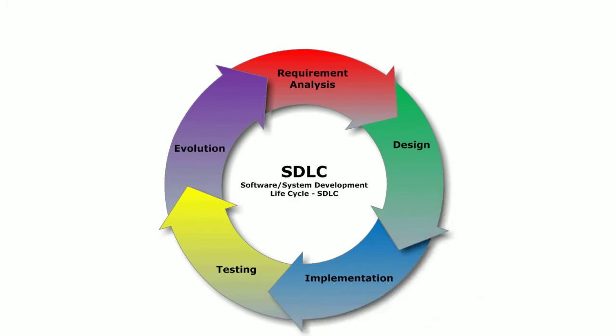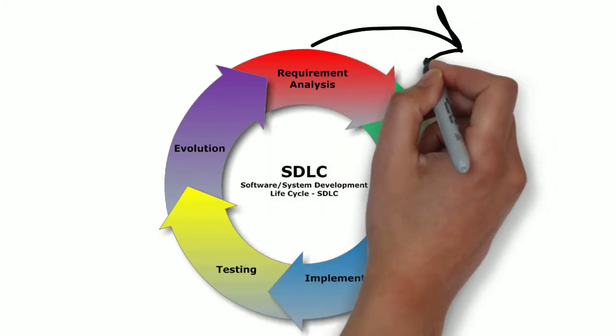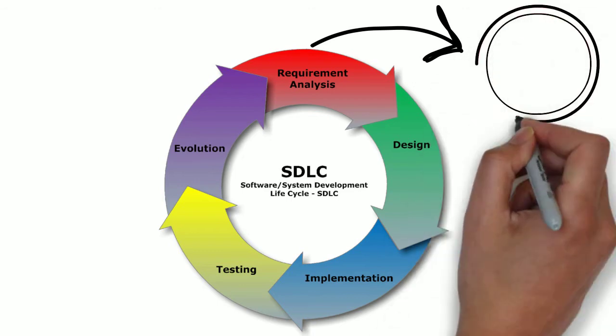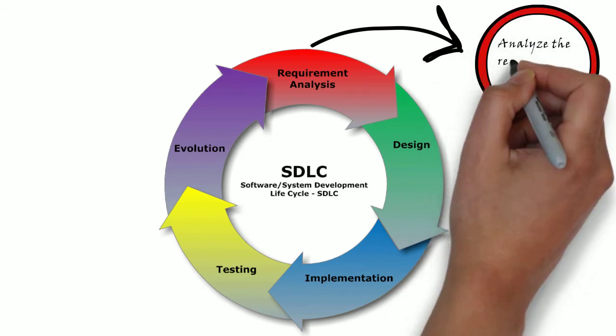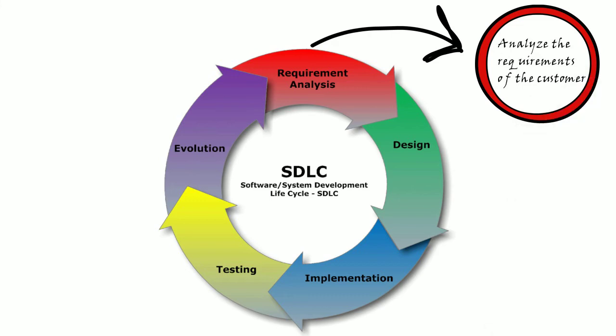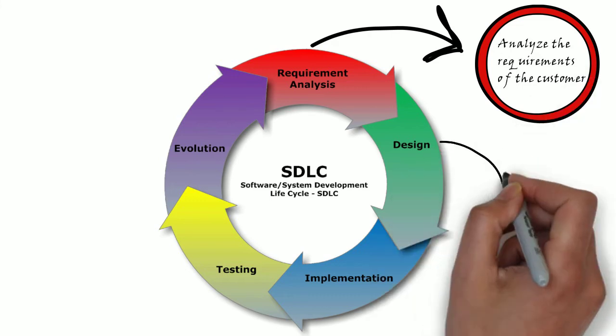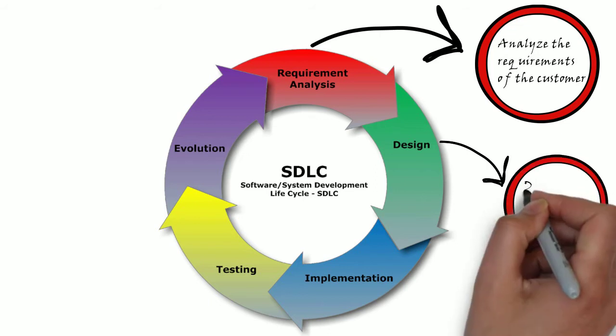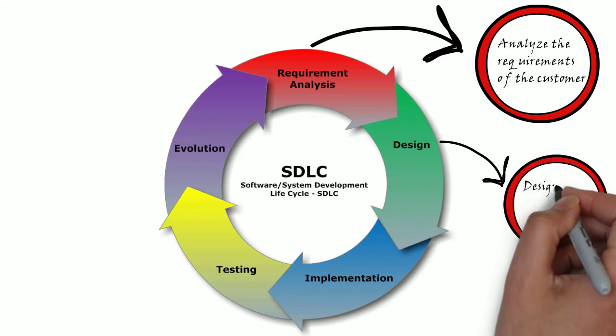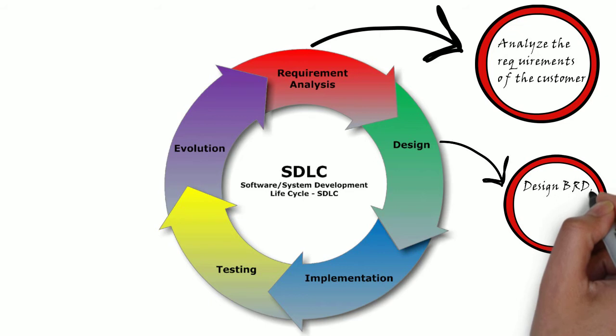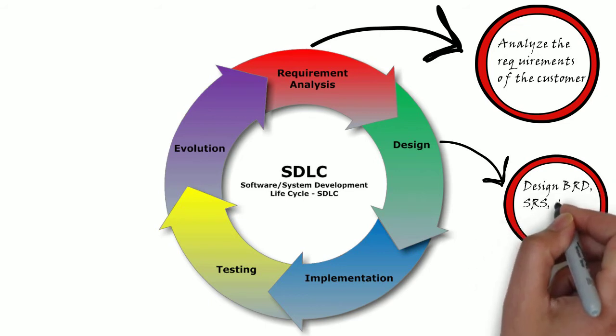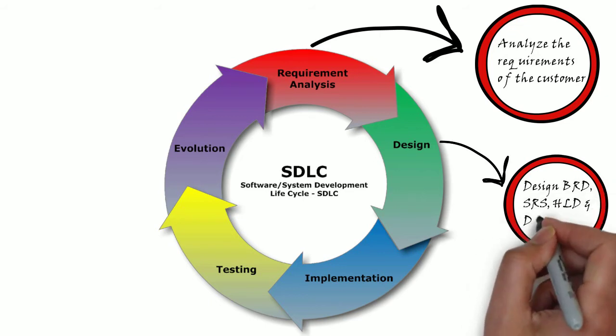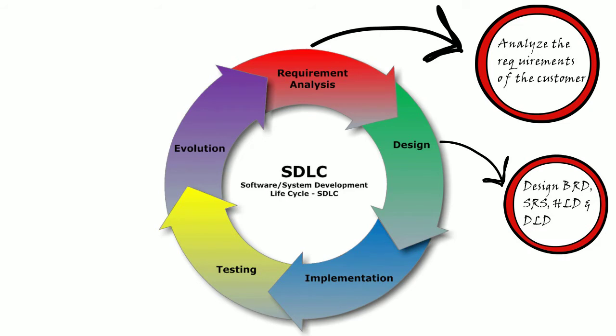In the first stage, requirement analysis phase, the requirements from the customers are collected, analyzed and documented. During the design stage, business requirement documents and system requirement specification documents are prepared. The solutions for the requirements are decided and the technical details would be captured in high level design documents and detail level design documents. This would be further taken as a base for making the software.